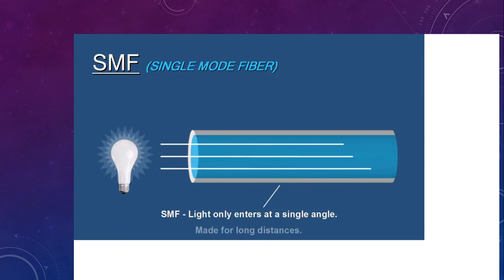Then we have fiber optical media. The first type is SMF, single-mode fiber, which uses a light source at a single angle. Light enters from one end at a single angle, which is why it is able to travel long distances.